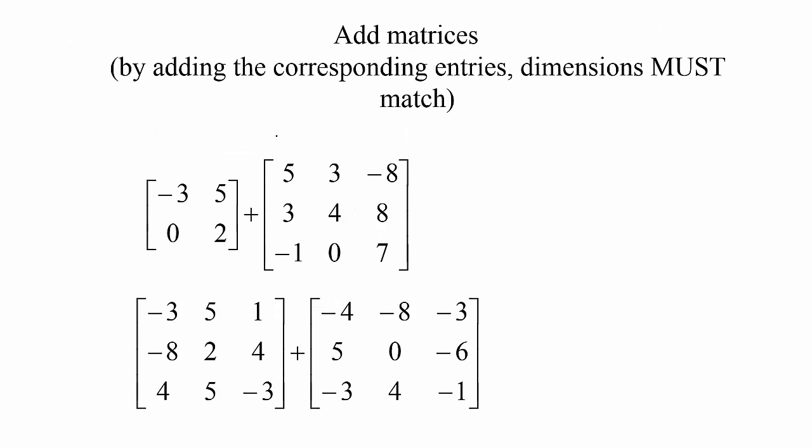To add two matrices they have to be the same size. This first one is 2 by 2, but the second one is 3 by 3, so that won't work. We'll just say it doesn't exist, or better yet, it's not defined, because we only know how to add matrices that have the same dimensions.